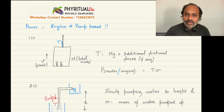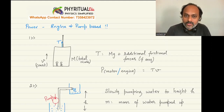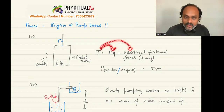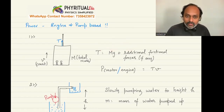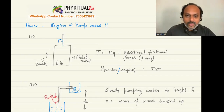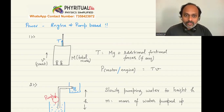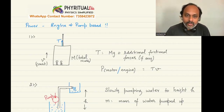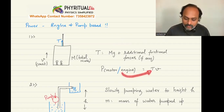If the lift is going to be accelerating, you write T minus mg minus frictional forces equal to total mass times acceleration. But for the constant velocity case, you get the tension using T equals mg plus friction. Once you get the tension, you can write power of the motor or engine as T times v, assuming the engine is 100% efficient. If efficiency is something different, I will tell you how to deal with it. So all discussions for now are based on 100% efficiency. That is point number 1.